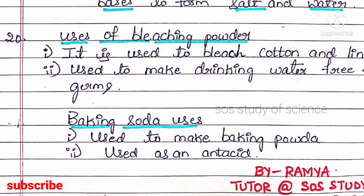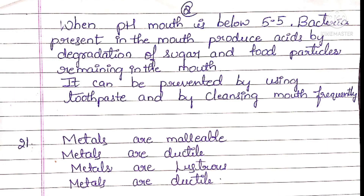The optional question asks how tooth decay is caused in humans and how it can be prevented. Tooth decay occurs when the pH of the mouth falls below 5.5. Bacteria present in the mouth produce acid by the degradation of sugar and food particles remaining in the mouth after eating. Tooth decay can be prevented by using toothpaste with proper base in it and by frequently cleansing the mouth.